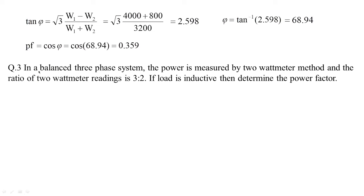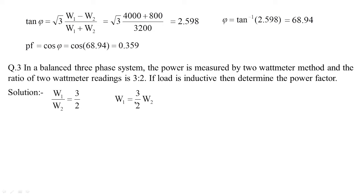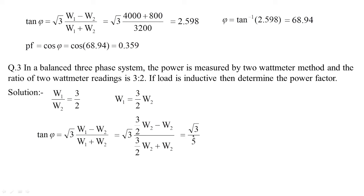In a balanced three-phase system, power is measured by the two-wattmeter method and the ratio of the two wattmeter readings is 3:2. If the load is inductive, determine the power factor. We set W1/W2 = 3/2, so W1 = (3/2)W2. Substituting into the tan φ formula gives tan φ = √3/5.